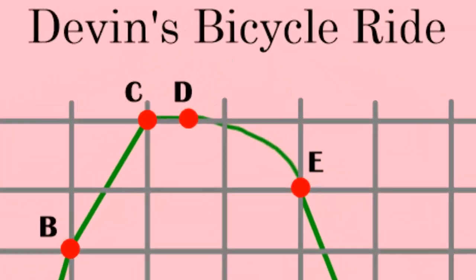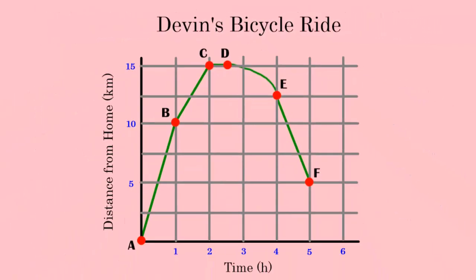Something interesting happens from point D to point E. We no longer have a constant rate. There's a curve. So we can't quite determine a constant speed. But what we can say is that Devon is coming closer to home or coming back home from D to E. And that length of time goes from 2.5 to 4 hours or an hour and a half. In an hour and a half, Devon traveled 2.5 kilometers from D to E.